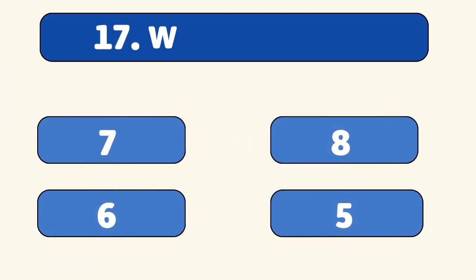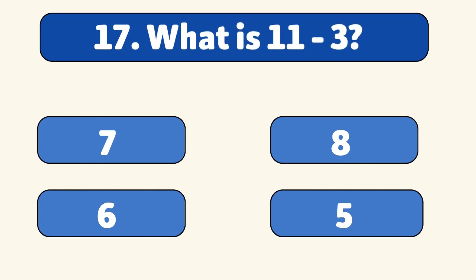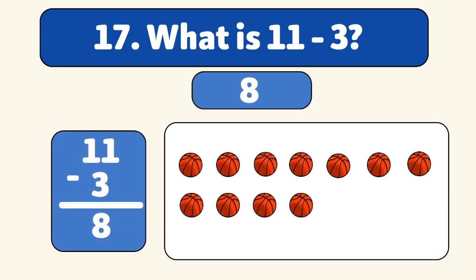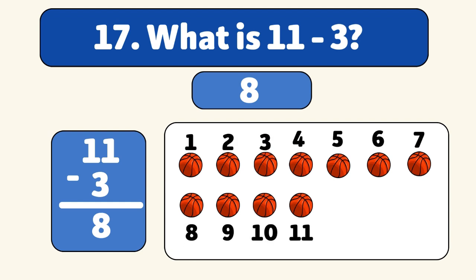What is 11 minus three? The answer is eight. We start with 11 basketballs and take away three. Let's count. One, two, three. We have eight basketballs left.